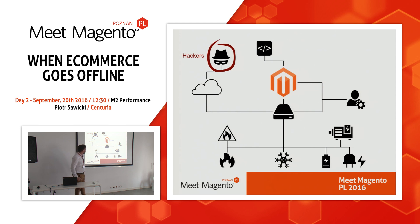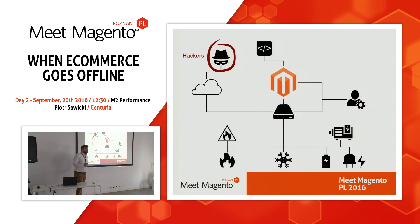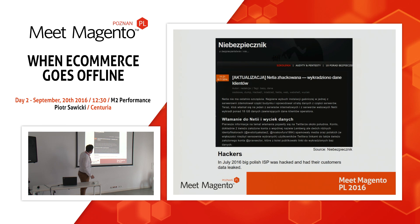Hackers somewhere on the internet can at any time break into your infrastructure and cause big damage. Unfortunately, we cannot fully protect ourselves against hackers. A few weeks ago there was information that Russian hackers broke into the NSA infrastructure — if the NSA can't protect themselves, then I think any infrastructure is breakable. As a small example, in July 2016 there was a hacker attack on a big Polish internet service provider and their customer data was stolen and leaked.